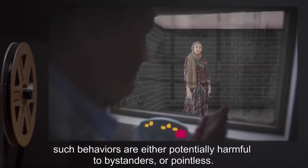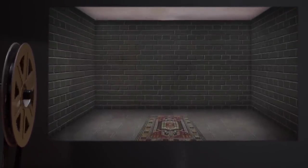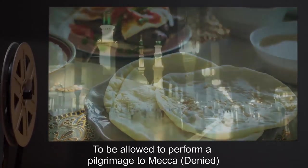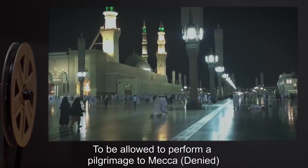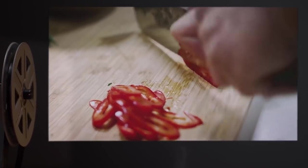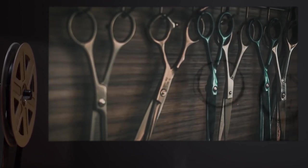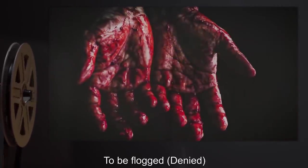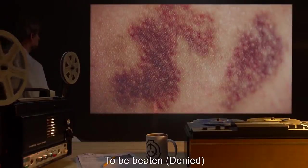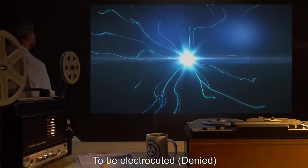Subject has requested: one prayer rug (approved), one Quran (approved), halal food (approved), to be allowed to perform a pilgrimage to Mecca (denied), daily portions of chili pepper of a minimum Scoville scale rating of 1 million (approved, contingent on good behavior), regular haircuts (approved), hot coals (denied), to be flogged (denied), to be stabbed (denied), to be beaten (denied), to be shot (denied), to be electrocuted (denied), to be set on fire (denied).